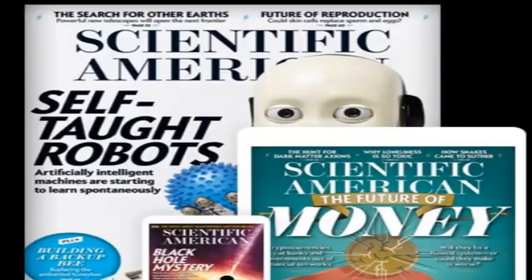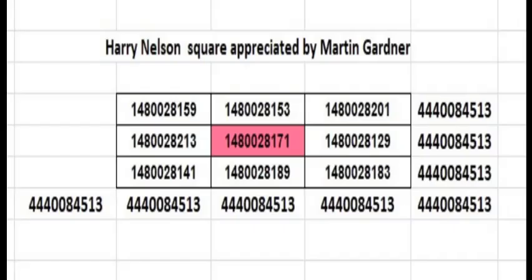All of you must have heard about Martin Gardner. He is a renowned mathematician. He contributes mainly to Scientific American. He had floated a competition to his audience, stating that anybody who creates a 3 by 3 magic square using consecutive primes would be rewarded with 100 dollars. Harry Nielsen was the one who took up that challenge. He created a 3 by 3 using consecutive primes. The magic sum of that consecutive prime is 4,440,084,513.